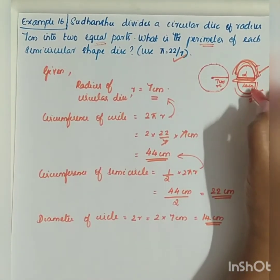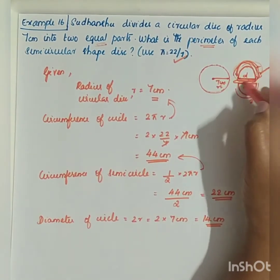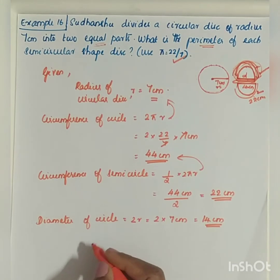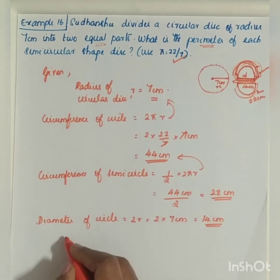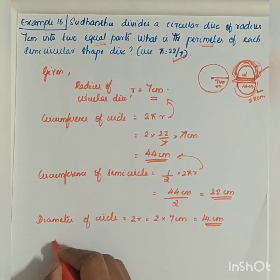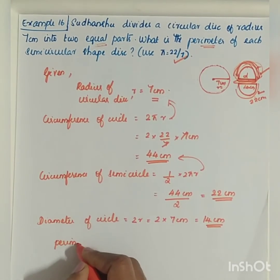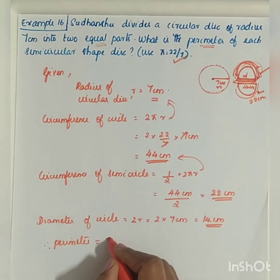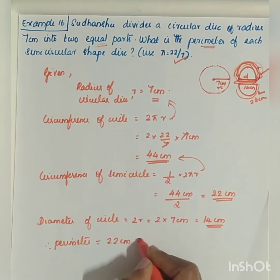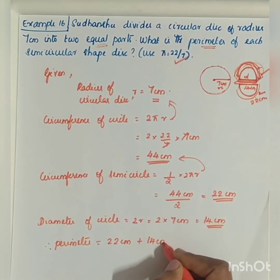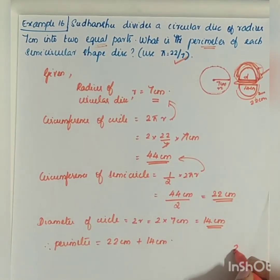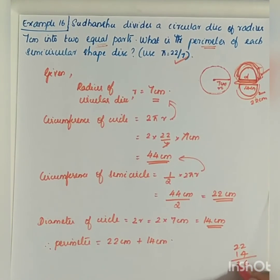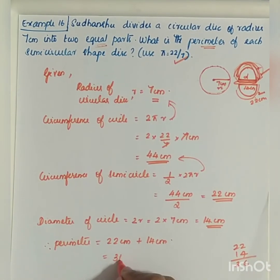The diameter is 14 cm and the circumference of the semicircle is 22 cm. If we add these both, we will get the perimeter of the semicircular shaped disk. The perimeter is equal to 22 cm plus 14 cm, which is 36 cm.